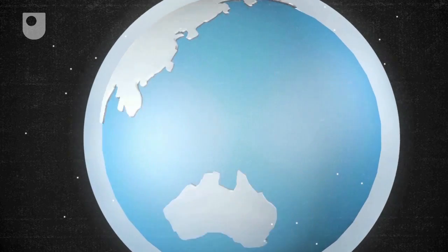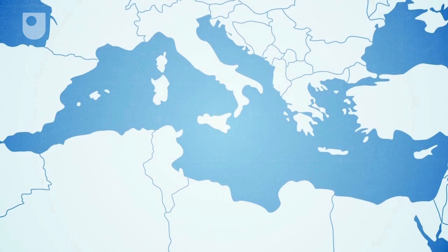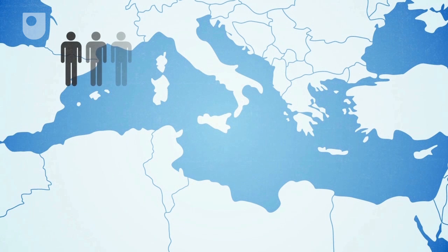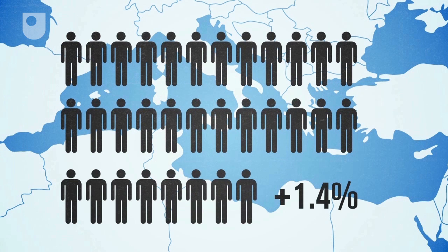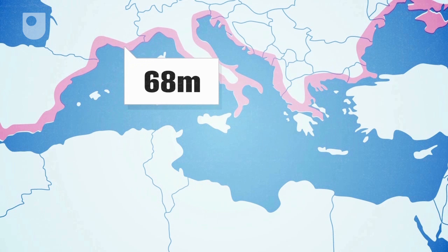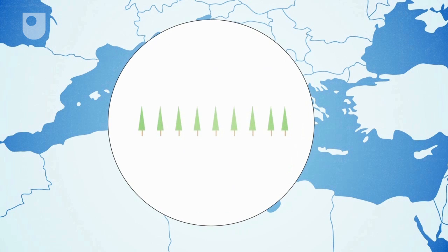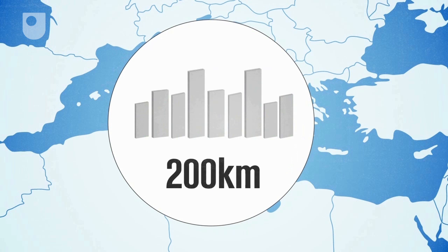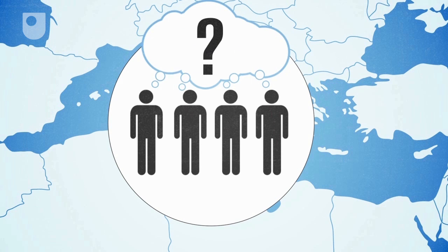The world is a very big place. The Mediterranean is a very complex and fascinating part of that world. Every year from now until 2025, there'll be a 1.4% increase in population in the region. The population in the north is projected to grow to 68 million, in the south to 108 million. Urbanisation is accelerating in the region — 200 kilometres a year are being built. Under such pressure, the people of the Mediterranean have choices to make.